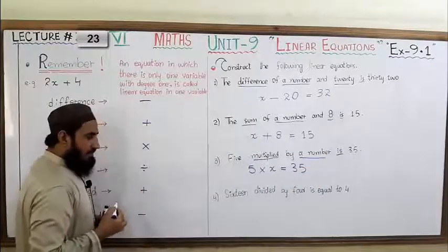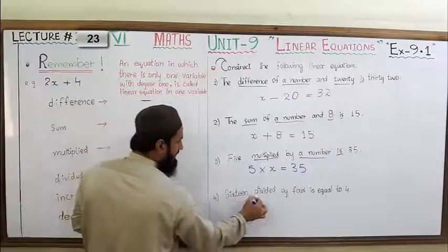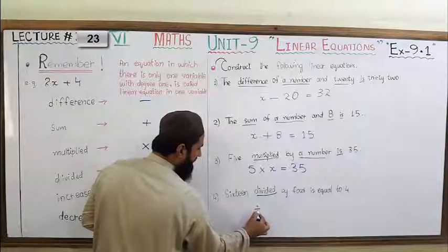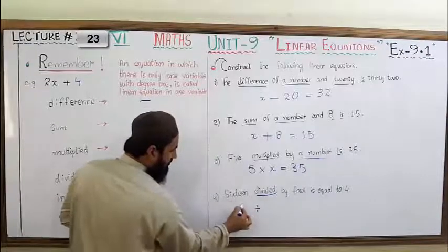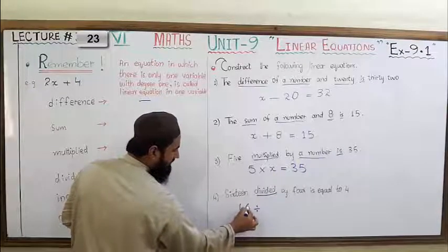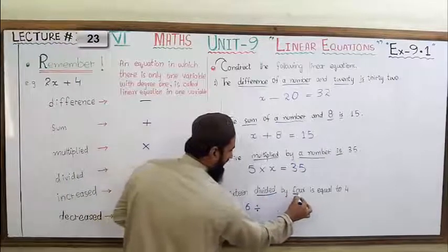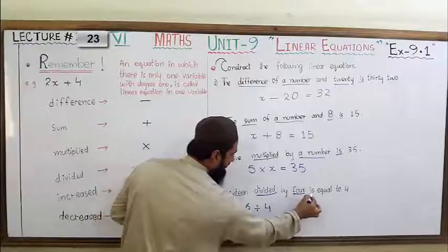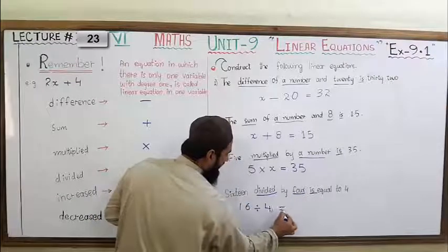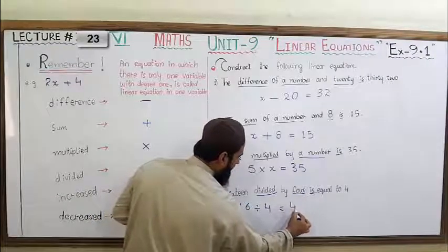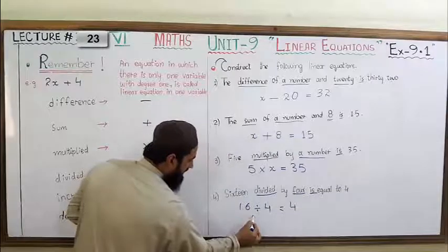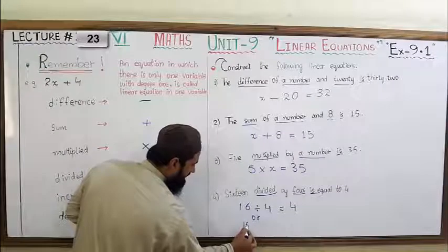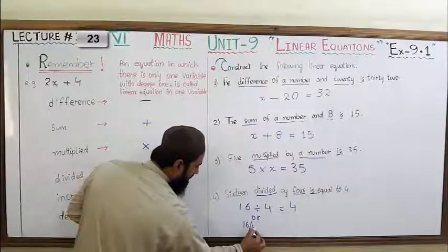Chautha statement: '16 divided by 4 is 4.' Divided ki sign ke liye divide ki sign banaenge. 16 ko as it is utar denge. 'By four' — yani four se divide karna. 'Is' — equal to ki sign. 'Four' — aur four humne likh diya. Ye yaad rahe, isko hum yun bhi likh sakte hain: 16 ÷ 4 = 4.